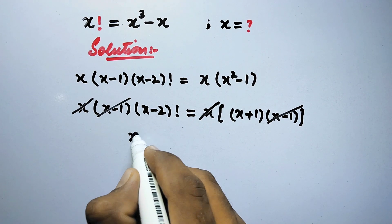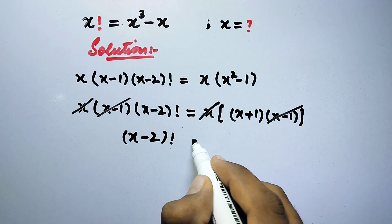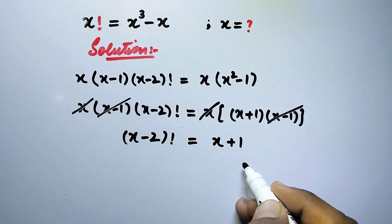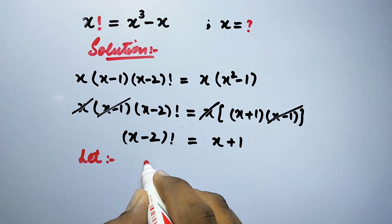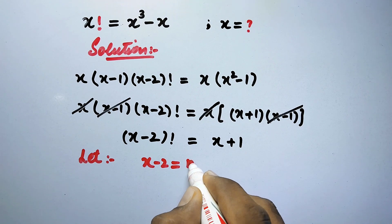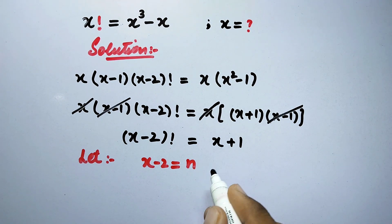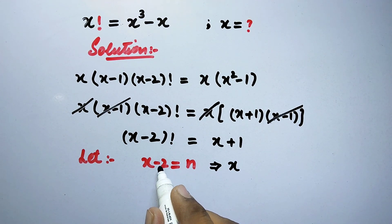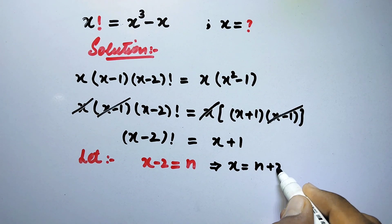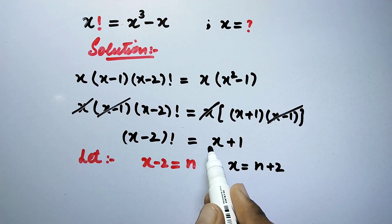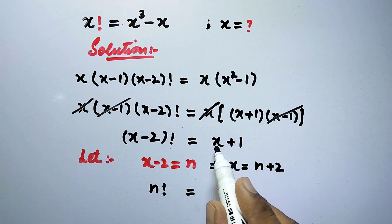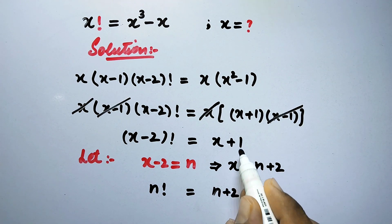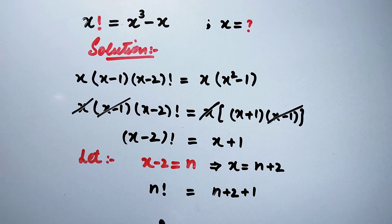We are now left with (x minus 2) factorial equals x plus 1. Next, we let x minus 2 equal to n, so x equals n plus 2. Substituting these values into the equation gives us n factorial equal to (n plus 2) plus 1, which simplifies to n factorial equals n plus 3.